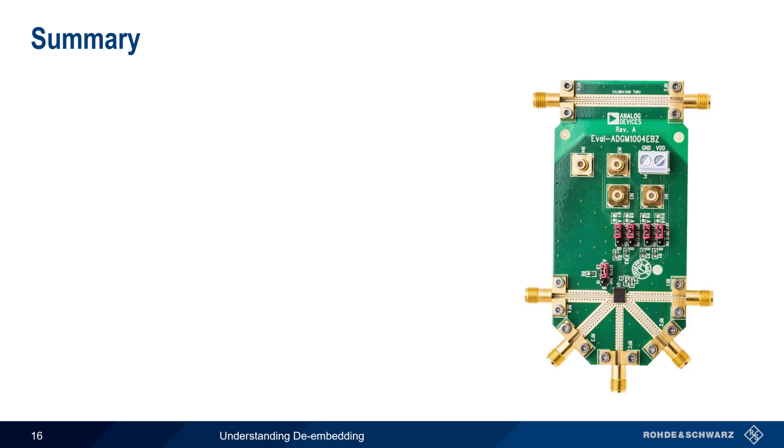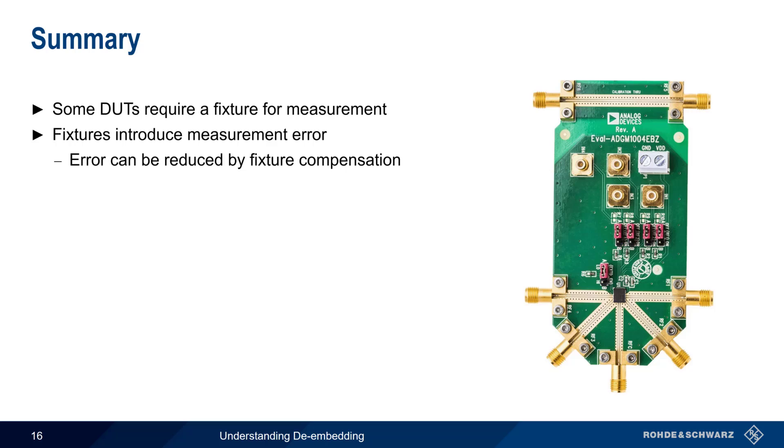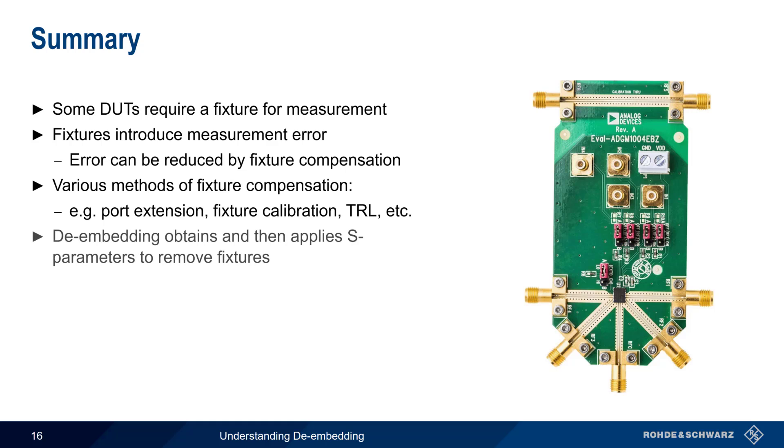So let's summarize what we've covered. A fixture is sometimes required in order to measure a DUT, for example, in the case of a non-connectorized DUT. This fixture, in turn, can introduce some level of measurement error, especially at higher frequencies. We can reduce the level of error by using various methods of fixture compensation in order to remove the effects of the fixture, and there are a number of different ways of doing this, such as port extension, fixture calibration, TRL, etc. De-embedding refers to a process whereby we use S-parameters to create mathematical models of a fixture's frequency-dependent behavior, and 2x through de-embedding is one example of a modern de-embedding methodology that's become popular due to its speed, accuracy, and simplicity.